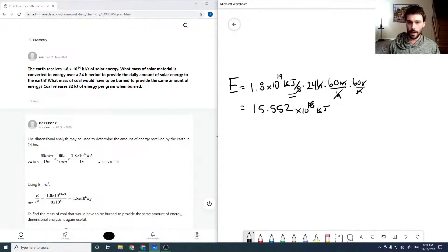And now mass, we would calculate from E equals mc squared, so our mass which corresponds to this energy would be 15.552 times 10 to the 18 kilojoules, divided by 3 times 10 to the 8 meters per second squared. So that's just rearranging the equation.